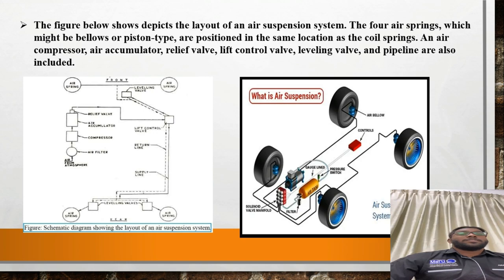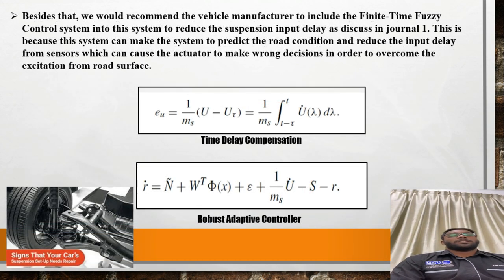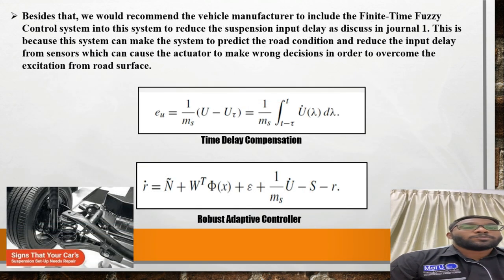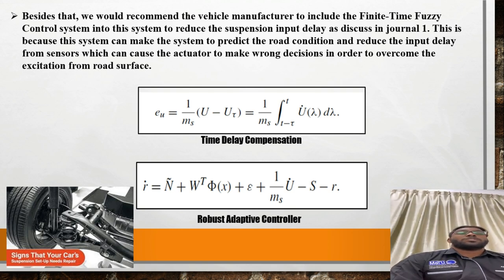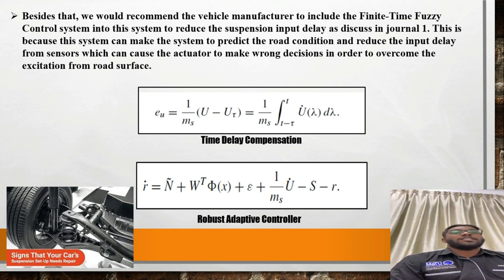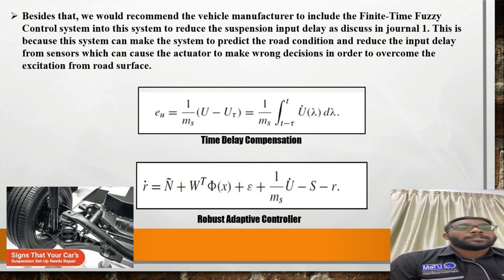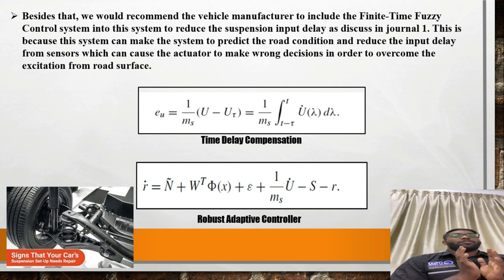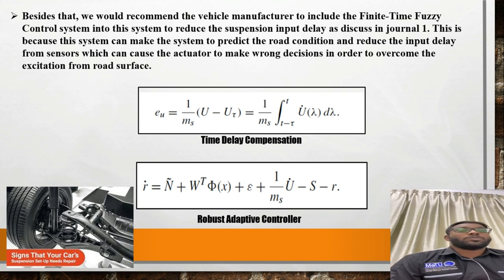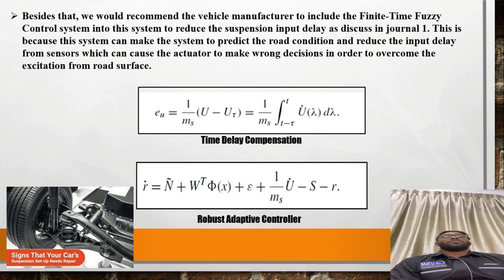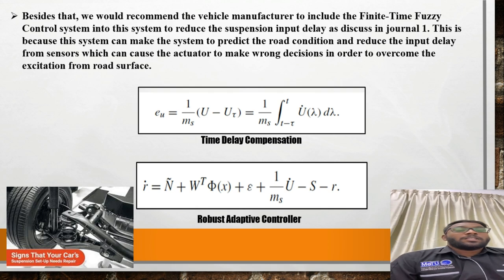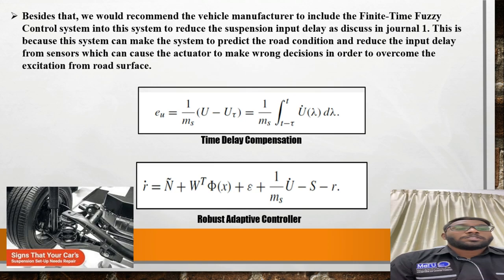This is the basic calculation of the air suspension system. Besides that, we recommend the vehicle manufacturer to include a finite-time fuzzy control system. This system reduces suspension input delay as discussed in journal 1, because it can predict road conditions and reduce input delay from sensors, which can cause the actuator to make wrong decisions when overcoming excitation from the road surface. The first formula is the time delay compensation formula, and the second one is the fuzzy adaptive controller.